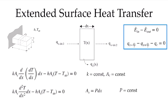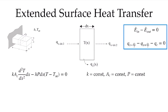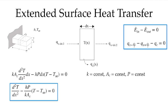Substituting that in, the perimeter is constant if the cross-sectional area is constant. I now have this expression with P dx, and I can divide through by k, A_c, and dx to simplify further. With all of those quantities assumed constant, I get the second derivative of temperature minus this combination of constants — h times P over k times A_c — multiplying the temperature difference between any location and the ambient temperature, equal to zero. That's my conservation of energy equation.